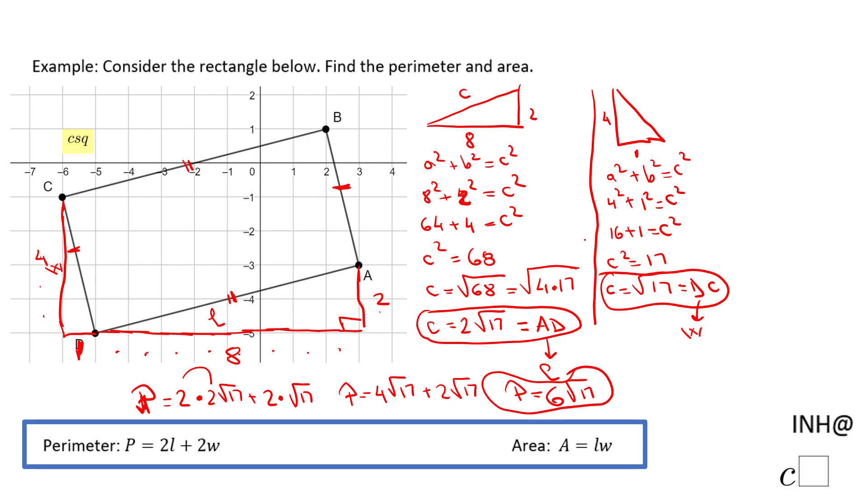Now we can move to the last part: the area of this rectangle. The area formula is length times width, or base times height, depending on how you need it.